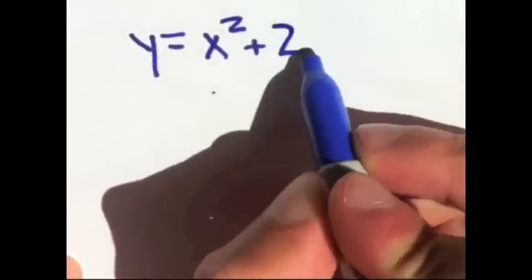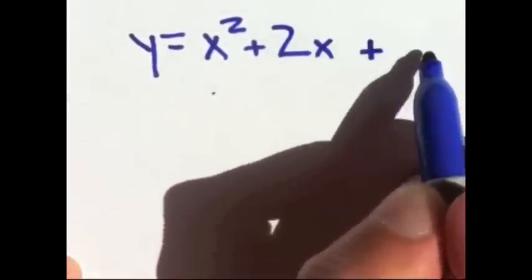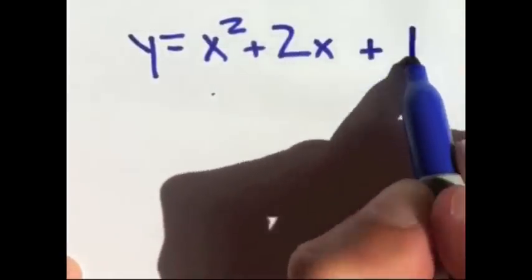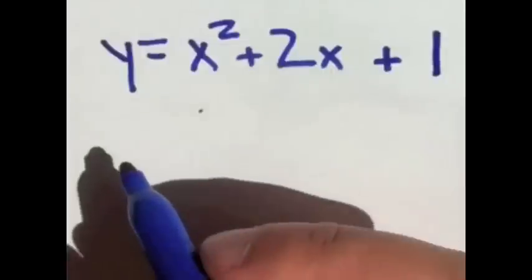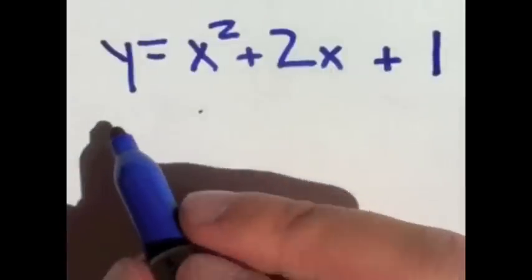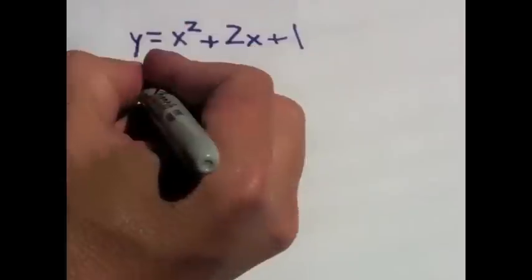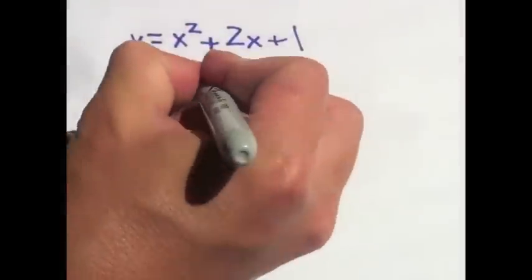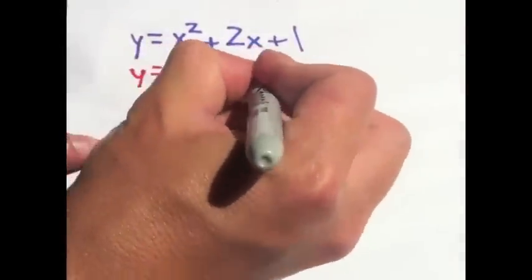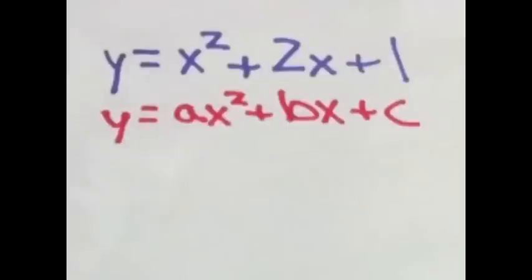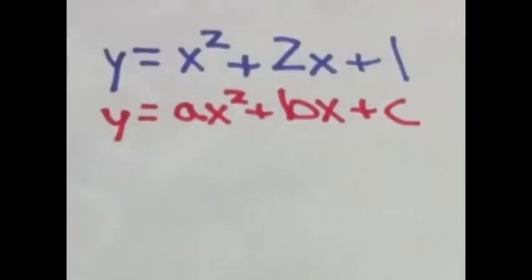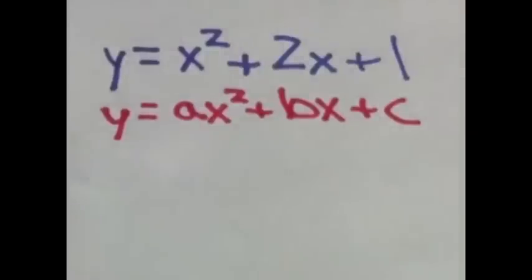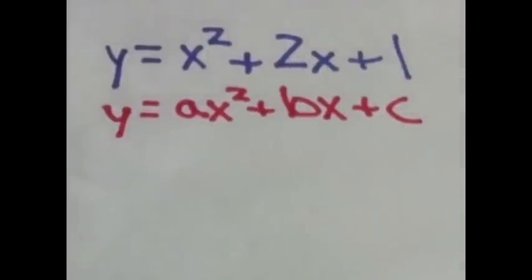Now all of these quadratic equations should be in standard form. That is y equals ax squared plus bx plus c, where the x's are x's and the a, b, and c are real numbers.